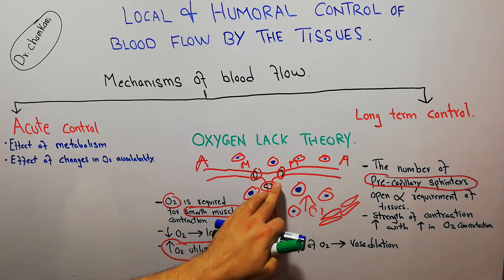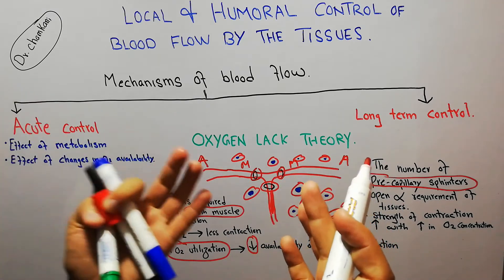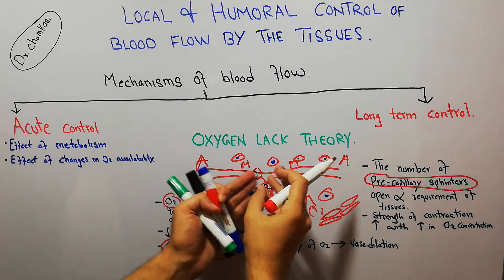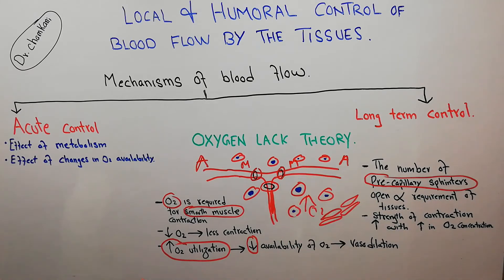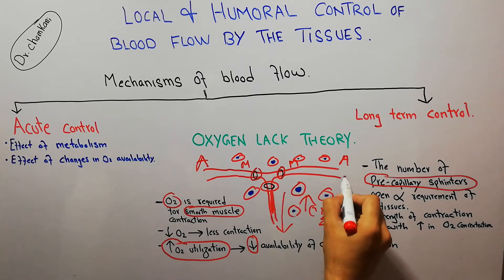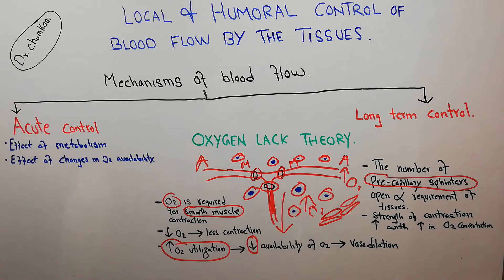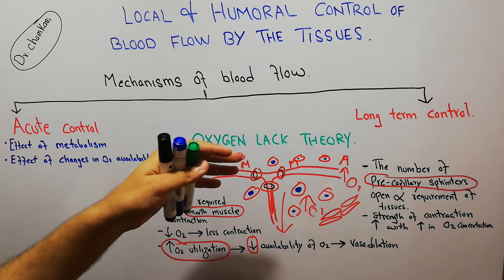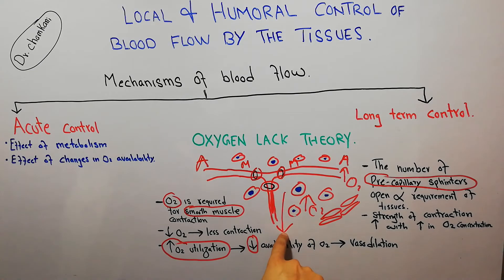When tissue oxygen demand is high, oxygen is consumed by the cells, so the smooth muscles of the pre-capillary sphincters receive less oxygen and cannot contract, remaining open. When the requirement of the tissue falls, more oxygen remains available in the blood, allowing the smooth muscles of the pre-capillary sphincters to contract more forcefully and close.